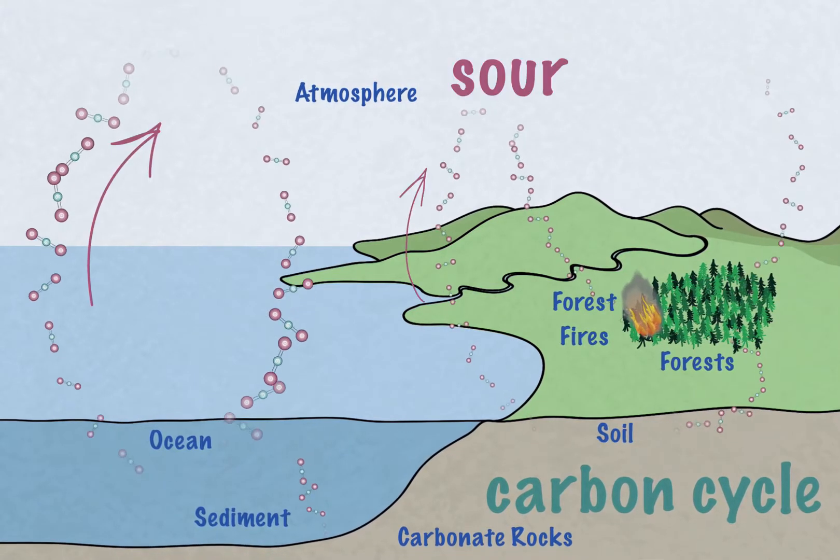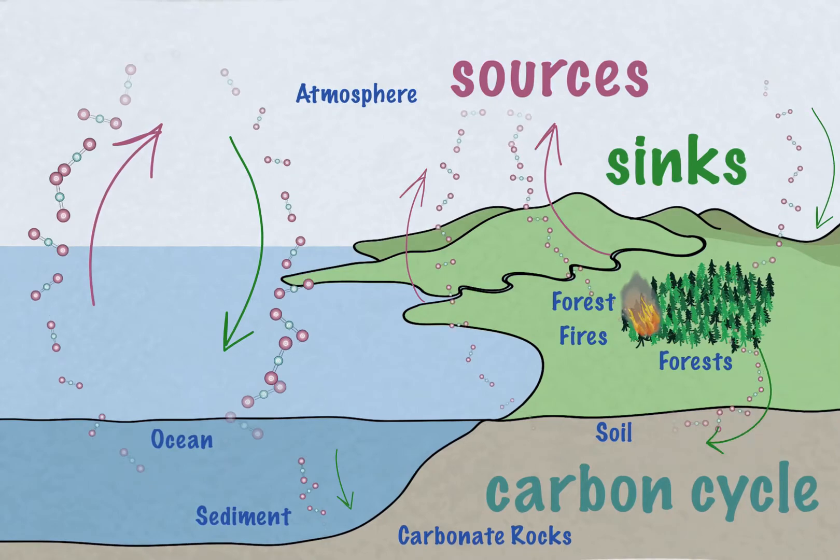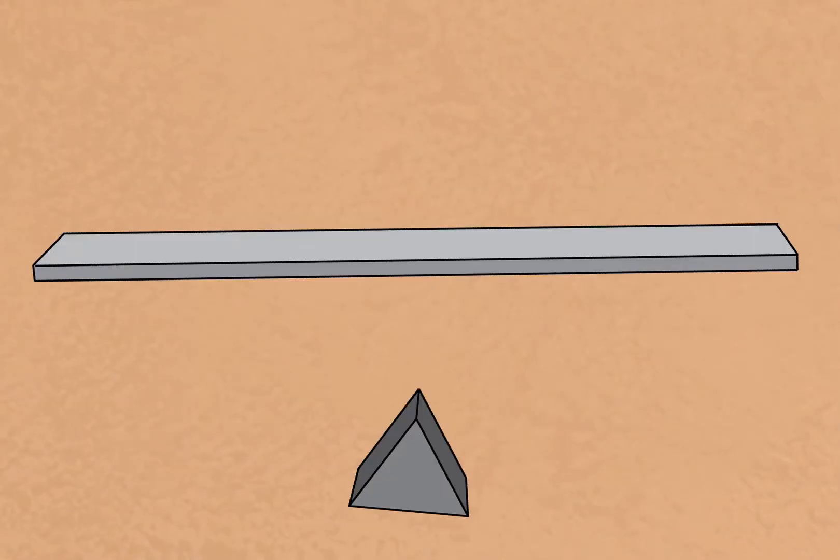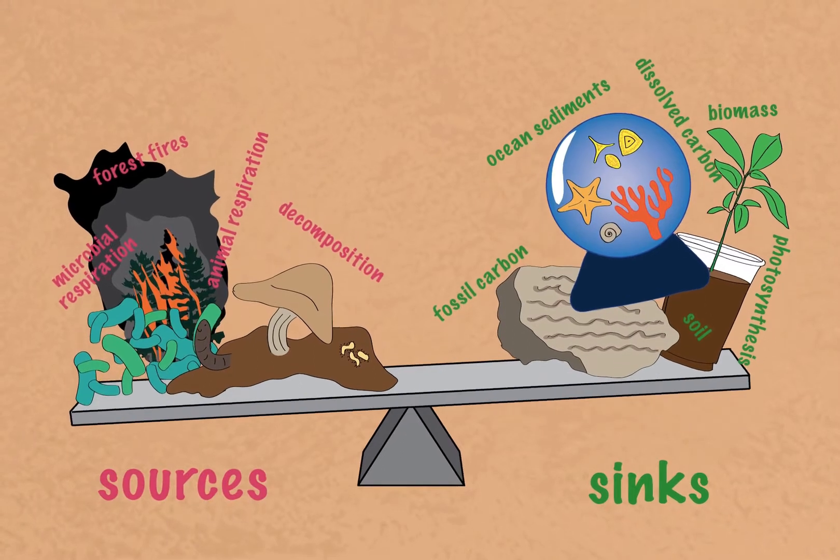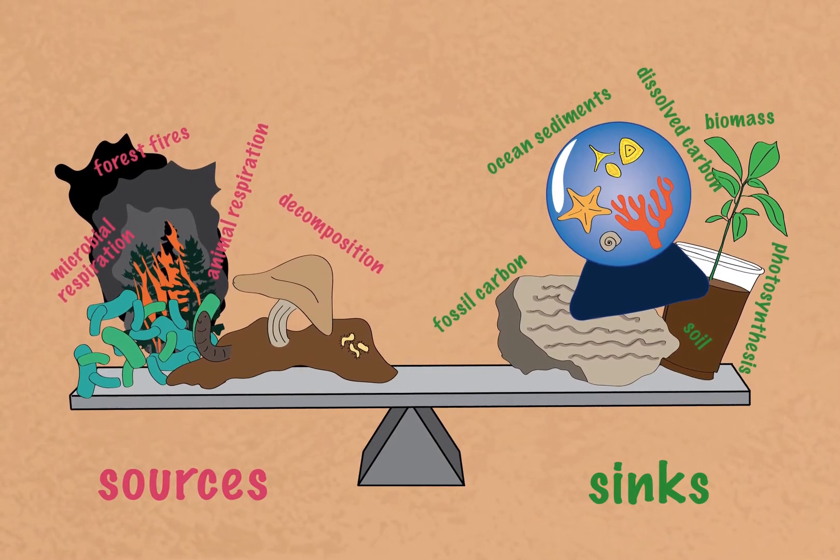Some parts of this cycle are sources of carbon, while others are sinks. All of these natural sources and sinks are pretty well balanced, just as much CO2 comes out of the atmosphere as goes in. But now, we've got a problem.